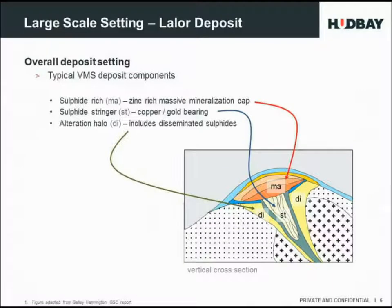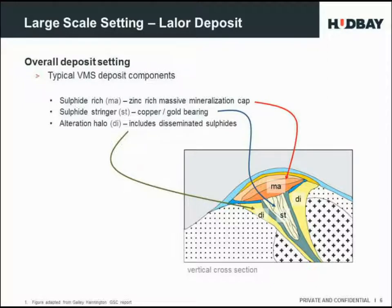VMS deposits have three mineralization components: a sulfide-rich cap shown in orange — generally pyrite-rich with zinc mineralization; underneath it, the stringer zone; and then associated with the stringer zone, a disseminated or alteration halo that formed during hydrothermal fluid movement through the rocks. On these slides, I've used MA to denote massive mineralization, ST for stringer, and DI for disseminated.